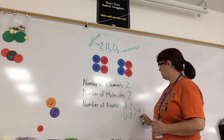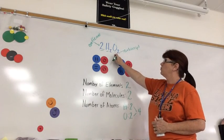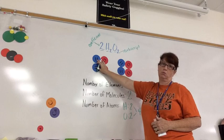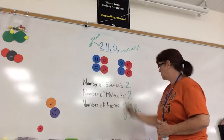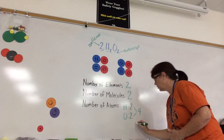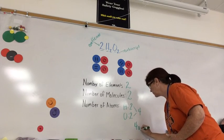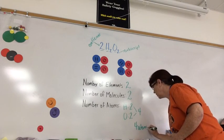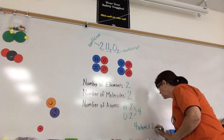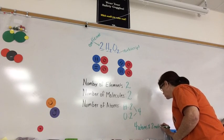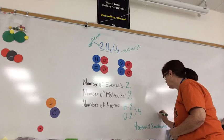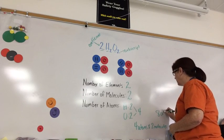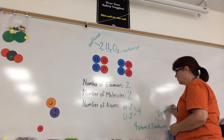This number here, 4 atoms, would be for 1 molecule. But I have 2 molecules of this substance. So I have to take this 4 and multiply it by my 2 for my molecules, and I get a total of 8 atoms.